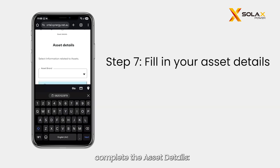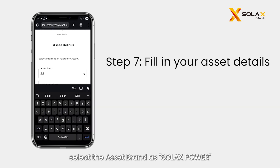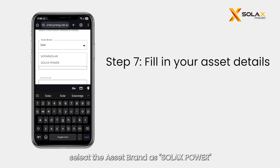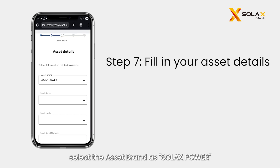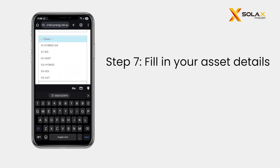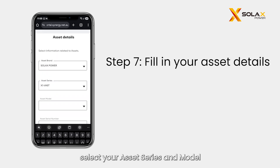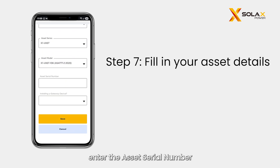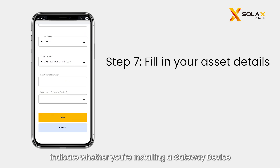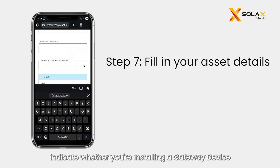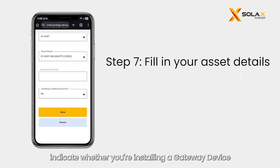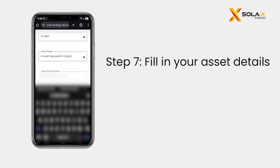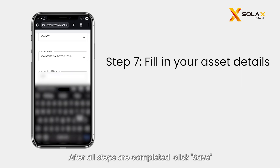Next, complete the asset details. Select the asset brand as Solax Power. Select your asset series and model. Enter the asset serial number and indicate whether you're installing a gateway device. After all steps are completed, click Save.